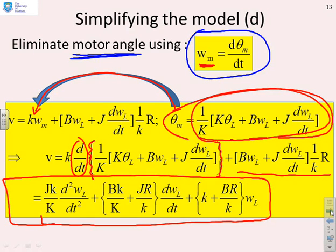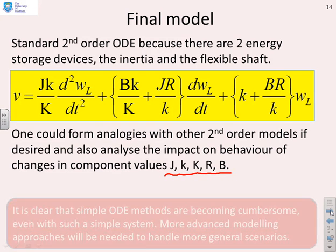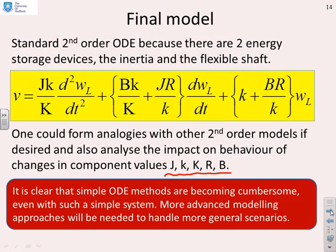This is the final model. You can see explicitly the impact of all the different component values, but it is getting quite messy. As we've gradually made our systems more complex, simple ODE methods — writing out equations and rearranging to a single ODE — is becoming cumbersome. If you want to do anything more complicated than this, you should be looking at more advanced modelling approaches. It works well for low-order systems, but beyond about what we've done here, it's probably going to be too cumbersome.